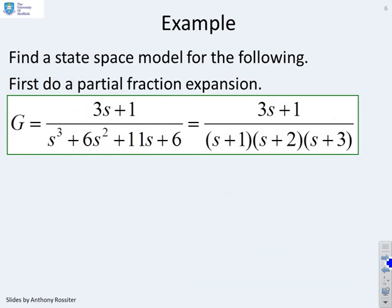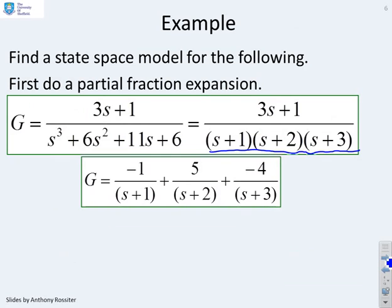An example then. Find the state space model for the following, and the first step is to do a partial fraction expansion. You'll notice I've factorized it for you already. I told you the poles are at minus 1, minus 2, and minus 3. So the first step is to find the residues. And I've done that for you to save time. You can see I've got minus 1 over s plus 1, 5 over s plus 2, and minus 4 over s plus 3.